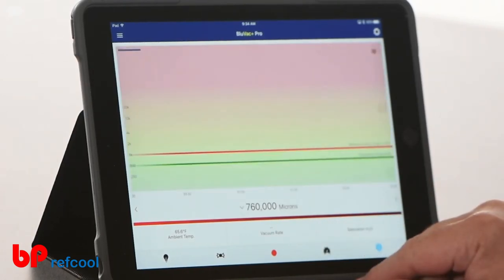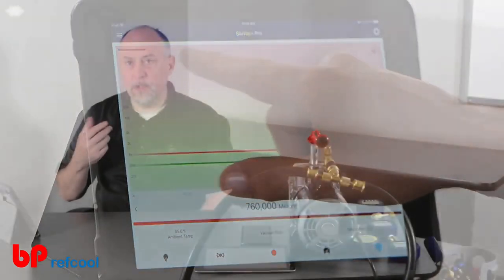We can switch over to our graphing display. You can see it's already started the plot. As soon as we connect to the app and connect to the gauge, it's starting recording right away because it's going to walk us through a test.